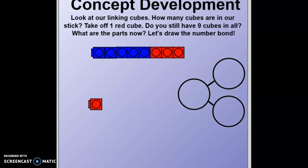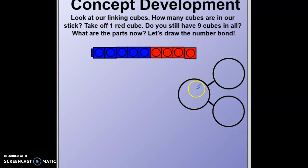Let's get started. If you are at home and you have nine of something, take out nine things. If you don't have nine things available, can you please draw me nine things on your paper and pause me? So, look at our linking cubes — how many cubes are in our stick? Let's count: one, two, three, four, five, six, seven, eight, nine. So that is our whole. All we're doing today is creating number bonds.